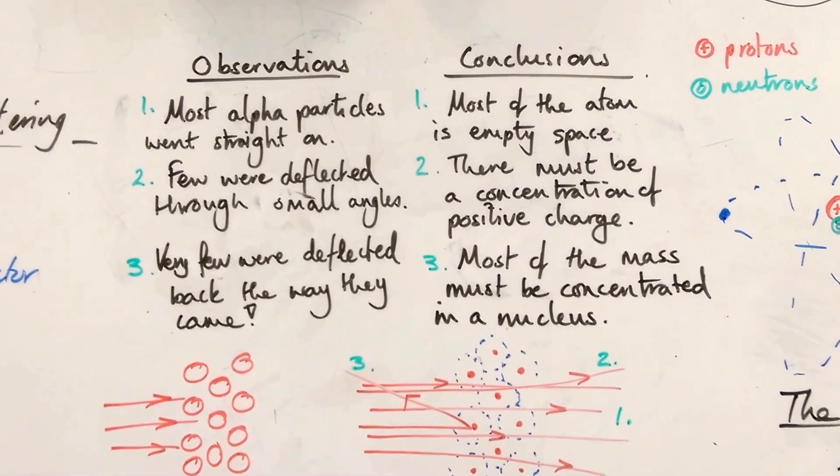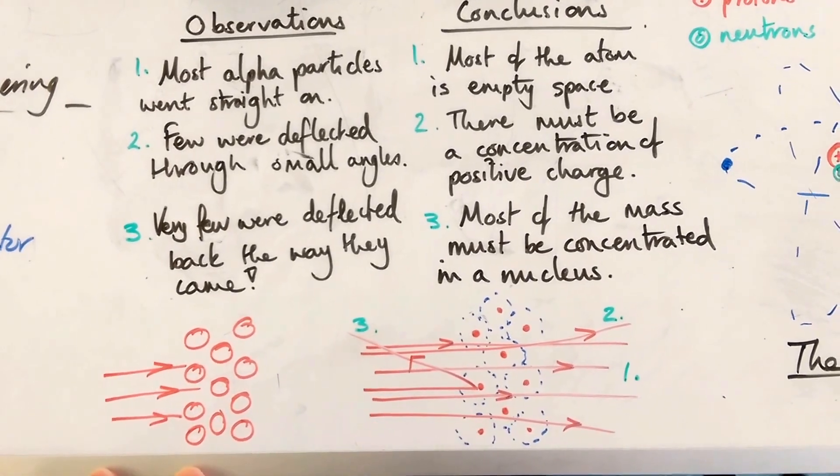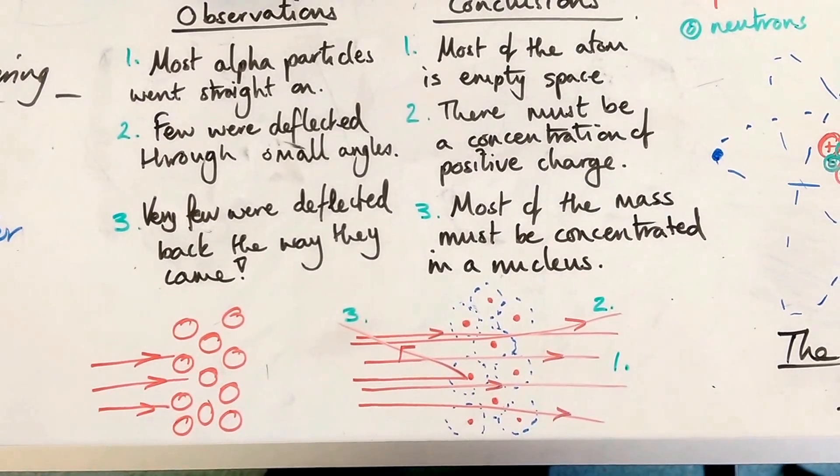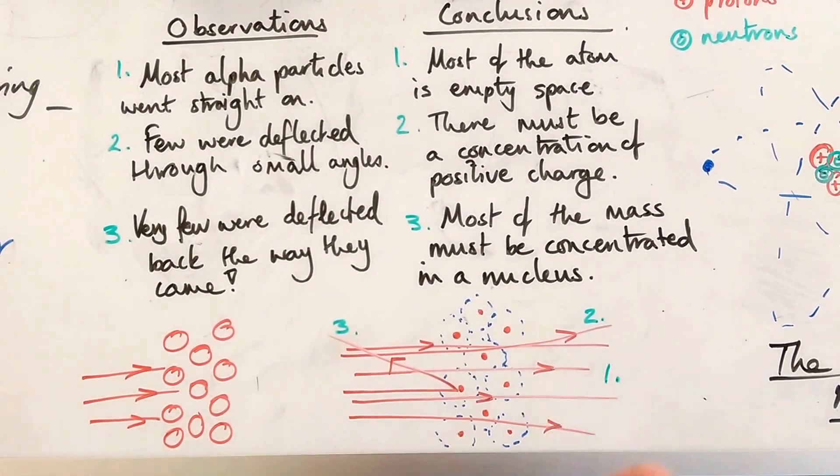So he expected to see this, the alpha particles not getting through the cake-like atoms. What actually happened was this, that most of them, number one, went straight on through.